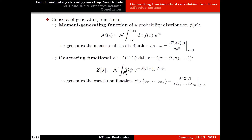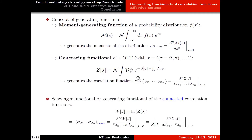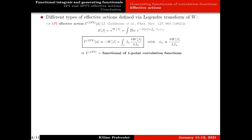The integral here is no longer a standard Lebesgue integral but a functional integral over the field phi, which is a number-valued quantity — not an operator. Another functional of interest is the Schwinger functional, defined as the logarithm of Z, which generates all the connected correlation functions. The last functional of interest is the effective action, defined as the Legendre transform of the Schwinger functional. Legendre transforming this W functional gives the so-called one-PI (1PI) effective action, which is a functional of phi — the one-point correlation functions.